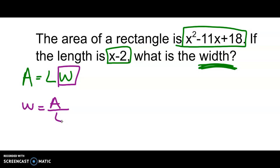So in this case our area is x squared minus 11x plus 18, and the length is x minus 2. So what we're really doing in this problem is we're dividing polynomials.